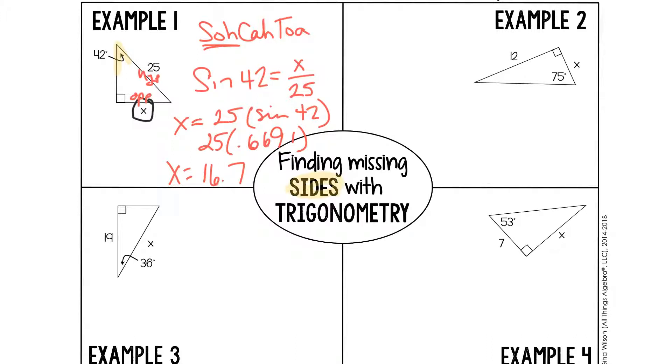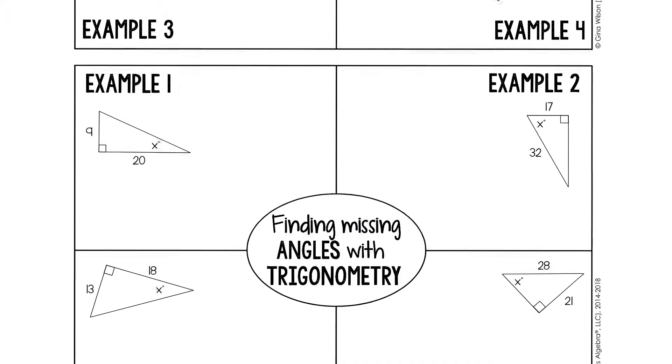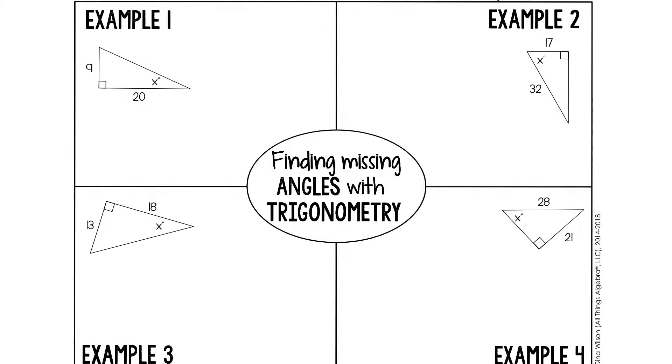What about angles? Finding missing angles with trigonometry. Once again, let's look at example one here. In this example we are looking to solve for angle x. In reference to my angle, I have the opposite side which is 9, and I have the adjacent. So in our SOHCAHTOA, what do we have? Opposite and adjacent gives us tangent. So tangent of x equals 9 over 20.